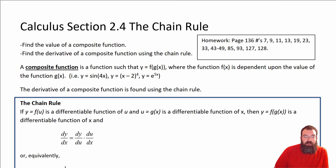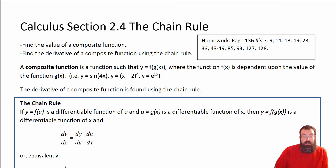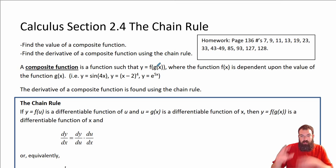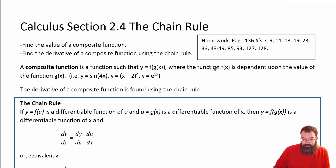Find the value of a composite function, and then find the derivative of a composite function using the chain rule. A composite function is where we just have two functions that are kind of put together — one is usually inside another, where f of x is dependent upon the value of the function g of x.